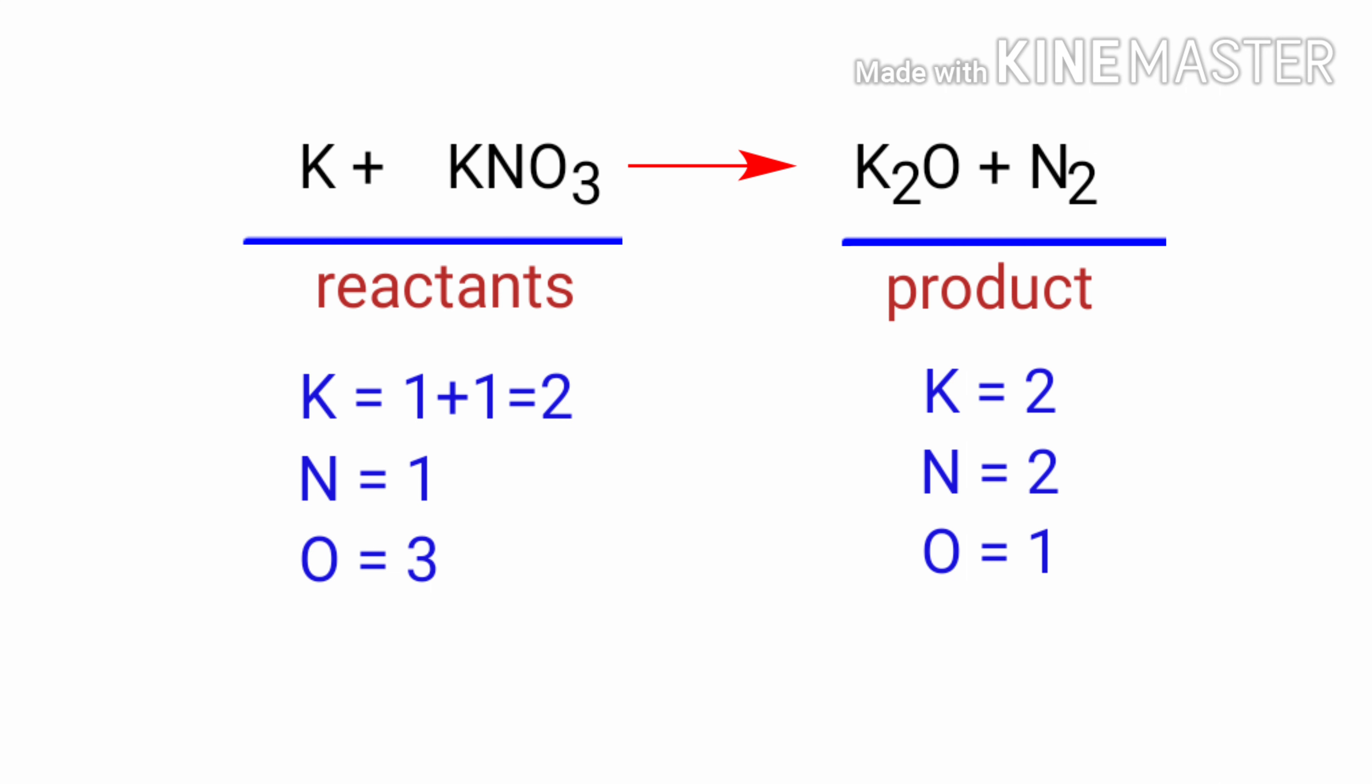In this equation, we need to balance the nitrogen atoms first. To do this, we need to put a coefficient of 2 in front of KNO3. The nitrogen atoms are balanced.